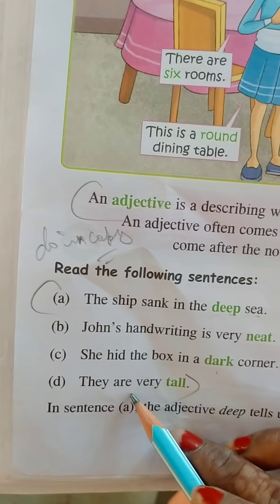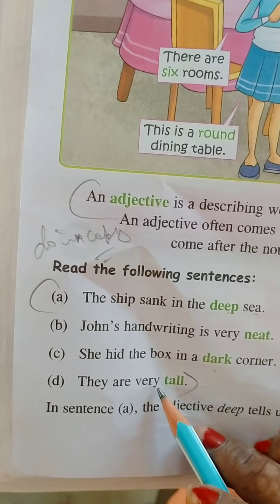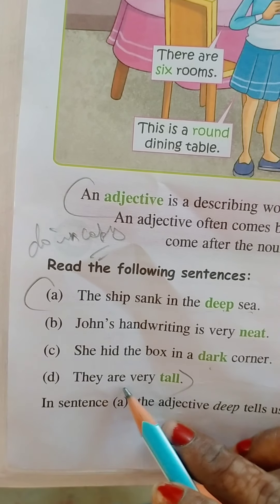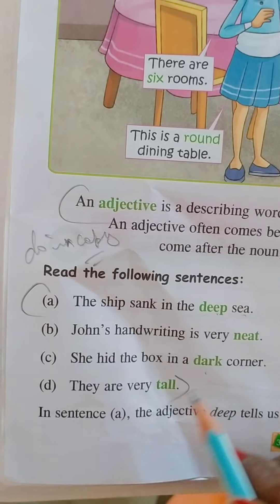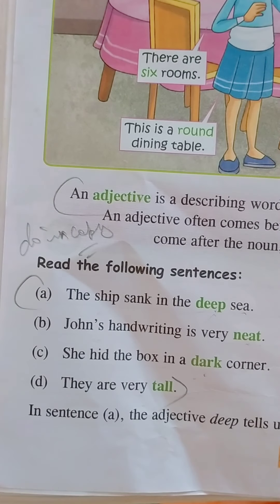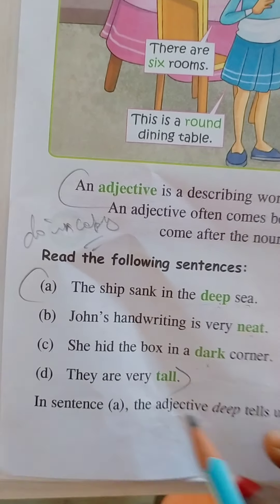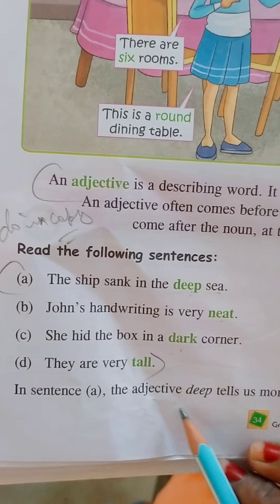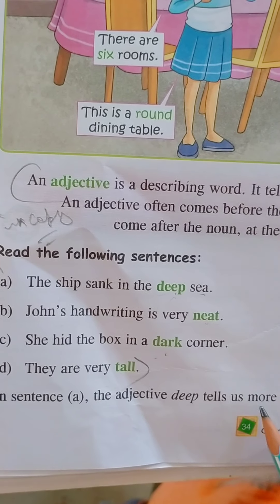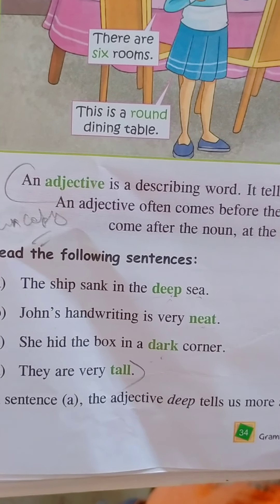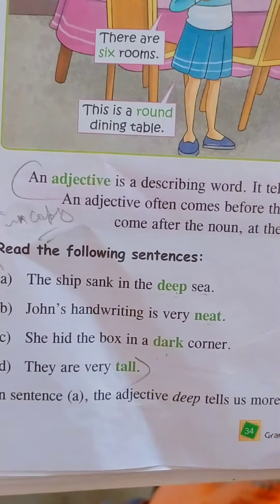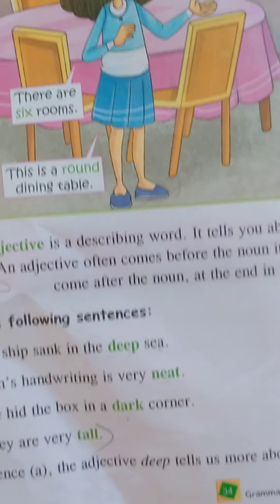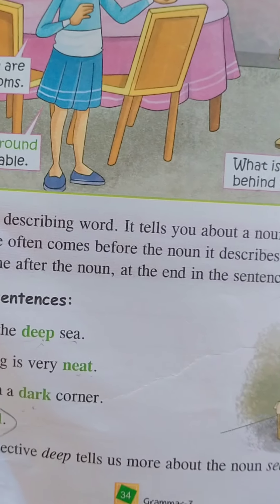They are tall — they are very tall. So all these green words are adjectives. In sentence A, the adjective 'deep' tells us more about the noun 'sea' — adjective deep word is describing the noun word sea, giving more information about it.